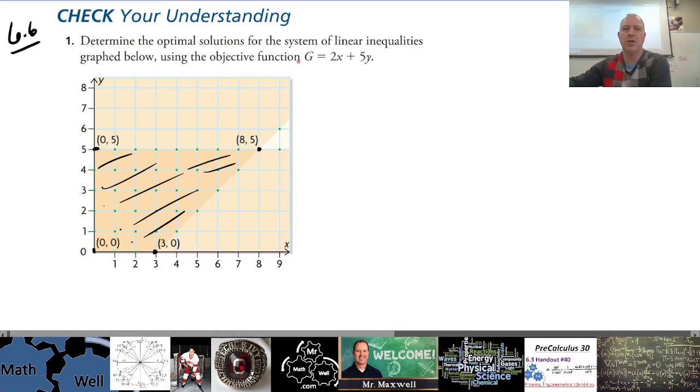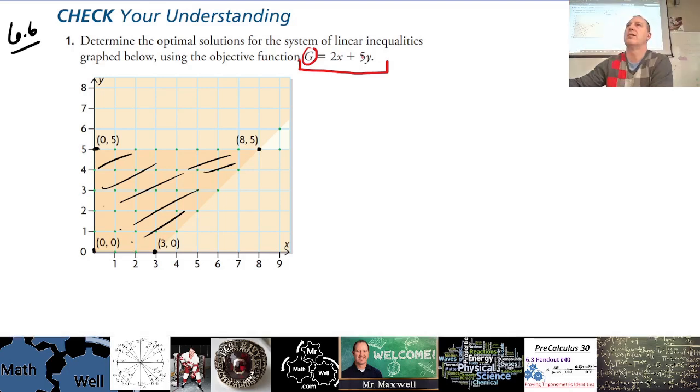So what we learned in 6.6 is that the objective function, the G, if you rearrange this equation, usually just this one off, this helps with the screen.